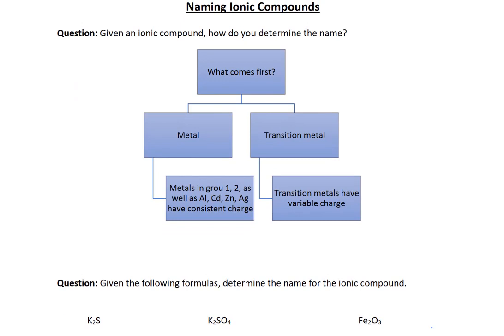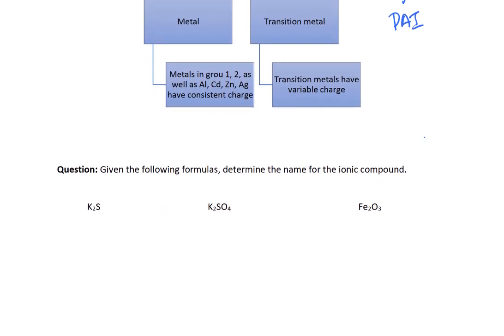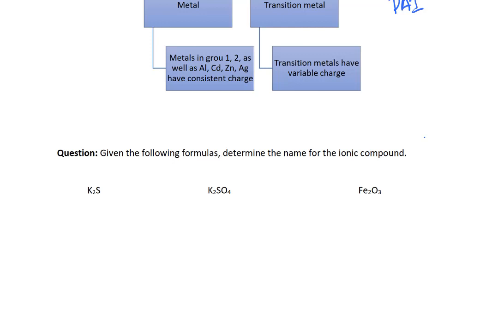So let's talk about naming ionic compounds. So if you're given an ionic compound in the formula, right, you're given a formula, how do you determine the name? So in the world of ionic compounds, there's two types of nomenclature. There's what you do if the metal always has the same charge and what you do if it's a transition metal. And this flow chart again is leaving out a third option of if a polyatomic ion comes first. So if we look at what comes first, metals that are in group one and two, as well as aluminum, cadmium, zinc, and silver, always have the same charge.